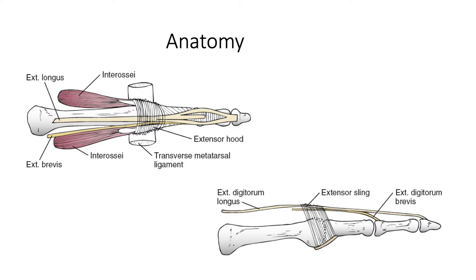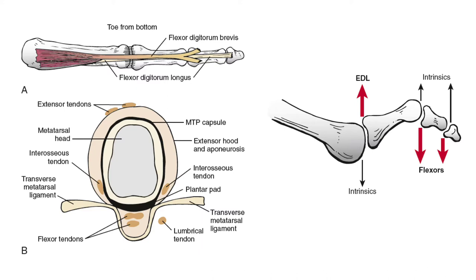Similar to the finger, you have the intrinsics and extrinsics playing a part, as well as the collaterals around the joints themselves, and in addition the plantar plate on the underside of especially the metatarsophalangeal joint. Typically if the EDL contracts you'll get extension at the MTPJ, and if the FDL contracts you'll get contracture at the proximal and distal interphalangeal joints. It's really the intrinsics that help plantar flex the MTPJ and dorsiflex and straighten the PIPJ and DIPJ.